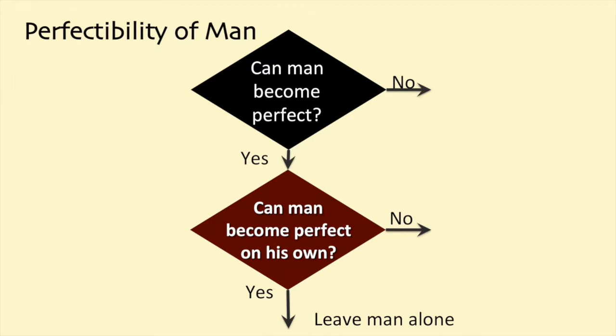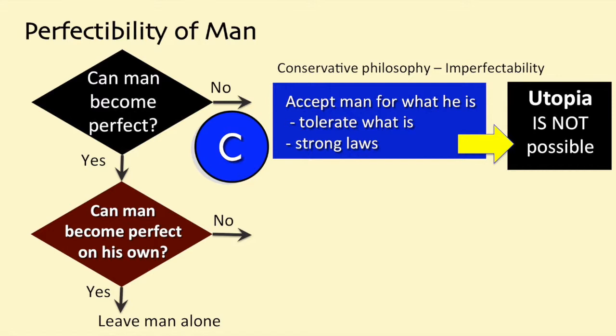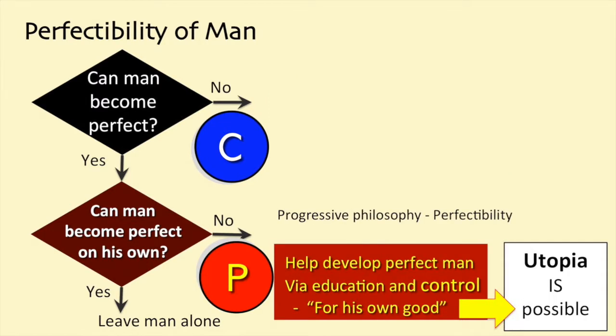What are the real-world ramifications of this debate? Using a simple flowchart, we can determine where the differing viewpoints will lead us politically. The first question to answer is: can man become perfect? If we answer no, we arrive at the conservative philosophy of imperfectibility. We accept ourselves for what we are and develop a strong set of laws to protect us from the human frailties in others. We realize that utopia — a perfect society — is not possible and not a realistic objective. We tolerate an imperfect society. If we believe that man can become perfect, we proceed to the next question: can man become perfect on his own? If yes, then we leave man alone to become perfect eventually and naturally.